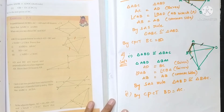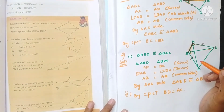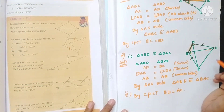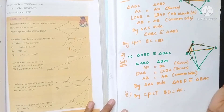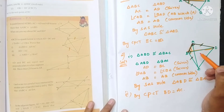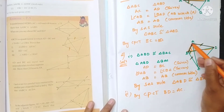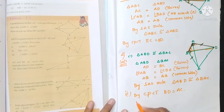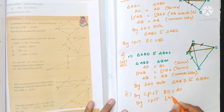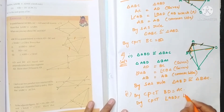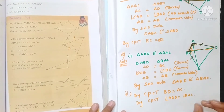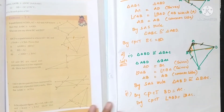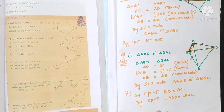Now, what about angle ABD and angle BAC? Angle ABD is in triangle ABD and angle BAC is in triangle ABC. They are also equal by CPCT — because the two triangles are congruent, and congruent means all parts are equal. So angle ABD is equal to angle BAC.